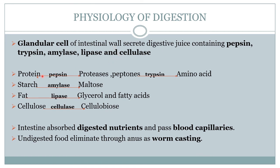The protein is converted into proteoses or peptones by the enzyme pepsin. Then the proteoses and peptones are converted into amino acids by trypsin. Starch is converted into maltose by amylase. Fat is converted into glycerol and fatty acids by lipase. Cellulose is converted into cellobiose by cellulase. The digested nutrients are absorbed by the blood capillaries and transferred to the tissues, and the undigested material is eliminated through the anus as worm casting.